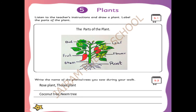Now see: bud B-U-D, fruit F-R-U-I-T, stem S-T-E-M, leaf L-E-A-F, flower F-L-O-W-E-R, root R-O-O-T. Totally we have six parts: bud, fruit, stem, leaf, flower, and root. These are the six parts of the plants.